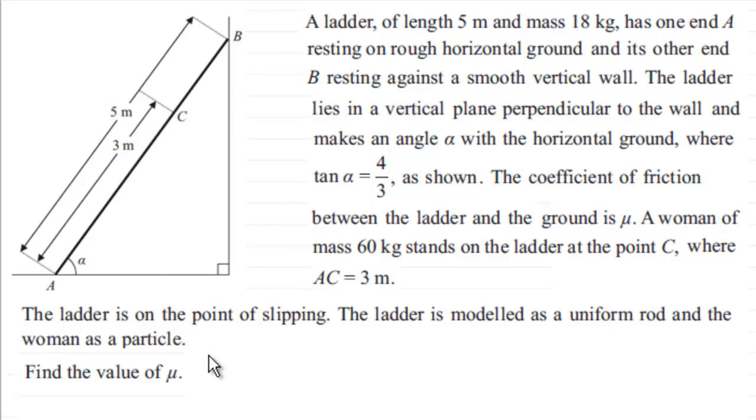So let's first of all start to add some forces on this. We're told that the ladder is modeled as a uniform rod and the woman as a particle. So if the ladder is uniform its weight is going to act in the middle. And it has a mass of 18 kilograms so its weight will be 18 g newton. So we'll mark that in the middle. Let's just say this is the middle here and its weight will act downwards. So just mark that in there as 18 g newtons.